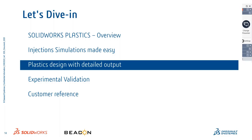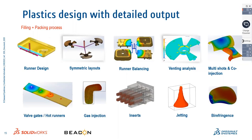Once the setup is complete and the analysis is run, the detailed outputs include filling and packing process results, runner design, symmetric layouts, runner balancing, venting analysis, multi-shot and co-injection analysis. Co-injection is where two different materials are used in one part — for example, a toothbrush handle made of one material and the body of another. Valve gates for hot runners with staggered opening are also supported, along with gas-assisted injection and insert molding.